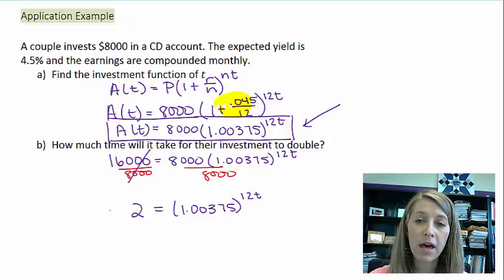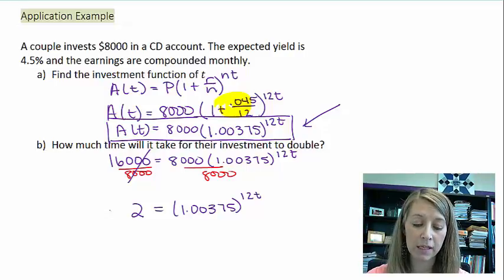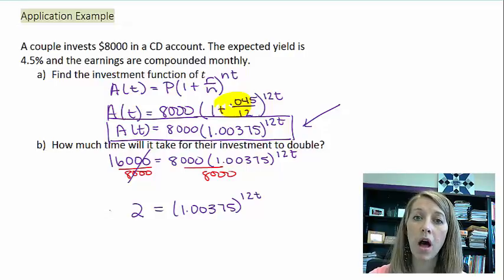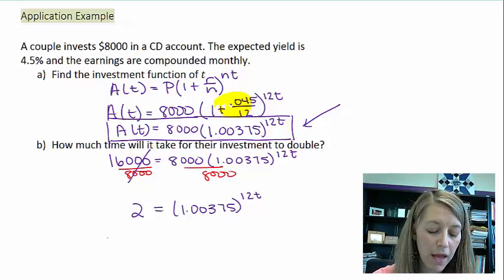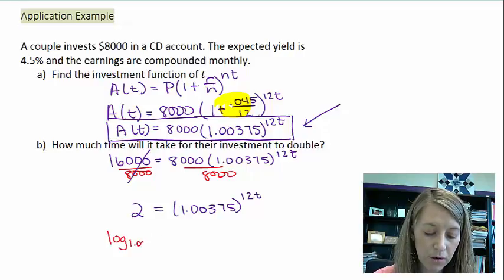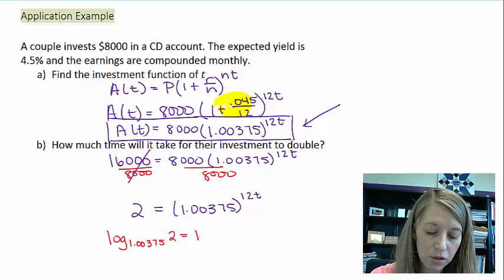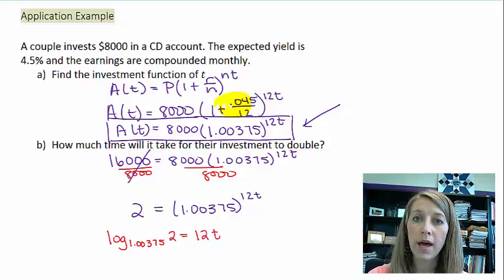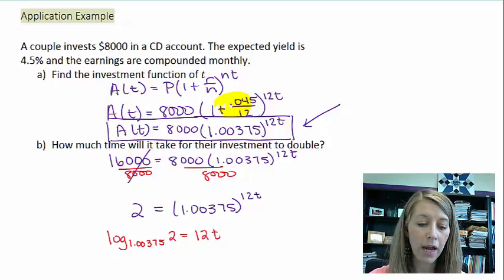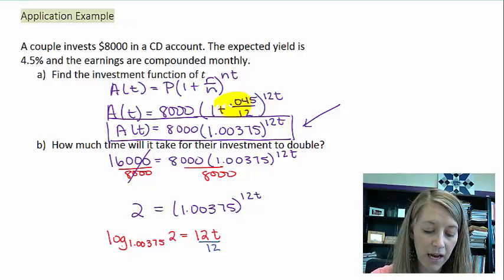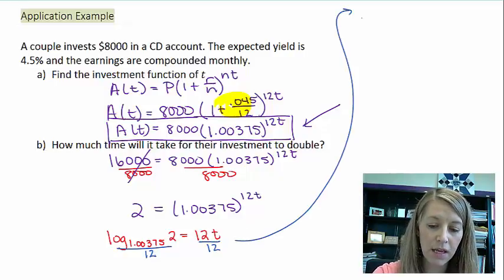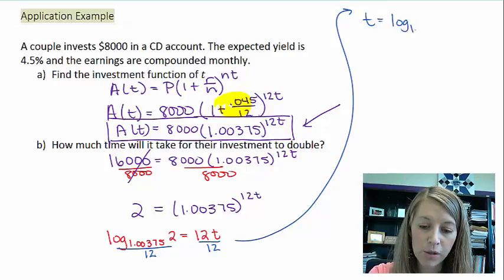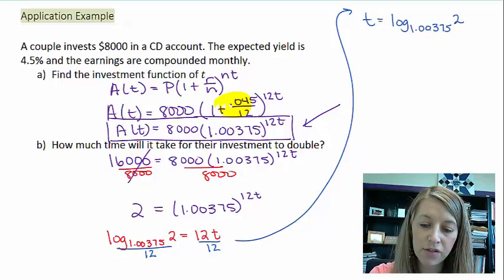How do we go about solving this? We have t in the exponent. How do we get that t out of the exponent? We can either think about converting it into logarithmic form, or we can think about taking log of both sides. Either one is going to give us the exact same answer. I'm going to convert this into logarithmic form. So this is log base 1.00375 of 2 equals 12t. Now if we really want to solve for t, we just divide by 12. So that gives us t equals log base 1.00375 of 2 all divided by 12.